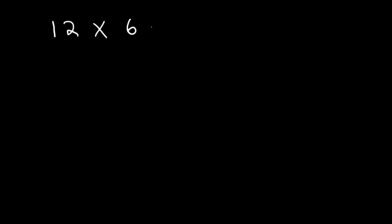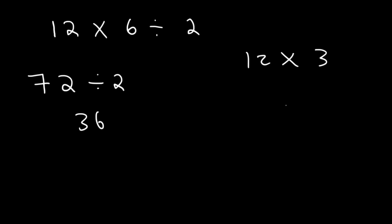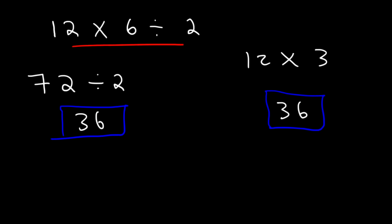What if multiplication comes first before division? Let's try 12 times 6 divided by 2 both ways. Left to right: 12 times 6 is 72, and 72 divided by 2 is 36. Or dividing first: 6 divided by 2 is 3, and 12 times 3 is 36 — same answer. So when multiplication comes first, order doesn't matter. But if division comes before multiplication, you want to divide first. The general rule: perform multiplication and division from left to right.